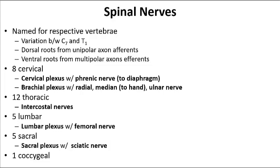The lumbar plexus innervates the pelvic girdle and portions of the lower limbs, arising from spinal nerves T12 through L4. The femoral nerve is the largest terminal nerve of this plexus, branching to form nerves on the medial knee and thigh. The obturator nerve innervates the adductor muscles of the leg. The sacral plexus arises from spinal nerves L4 to S4, and its largest branch is the sciatic nerve, which supplies the entire lower limb except the anterior medial thigh.